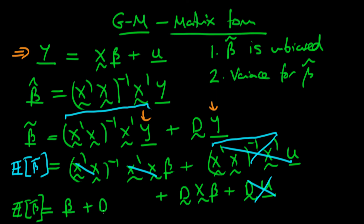So that's our form for the expectation of beta tilde, which includes the term d x times beta. In the next video we're going to show the conditions for beta tilde to be unbiased and then find the variance for that particular estimator. I'll see you then.